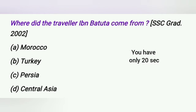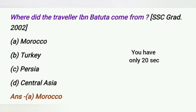Where did the traveller Ibn Battuta come from? A. Morocco, B. Turkey, C. Persia, D. Central Asia. The answer is Morocco.